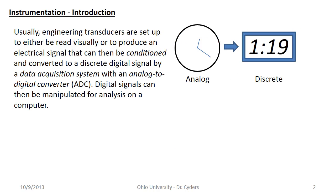We usually set transducers up for one of two broad applications. One is where you need a readout you can physically read — a visual indicator. You might take a reading three times a day or just monitor the system as you stand next to it. For example, on a gas tank you'll see a regulator where you can instantly read the tank pressure and the pressure at the outlet. For applications like that we use visual gauges, which aren't always analog — sometimes they're digital visual readouts.